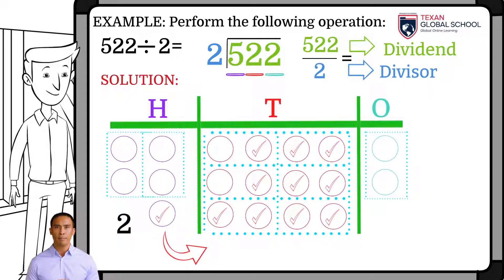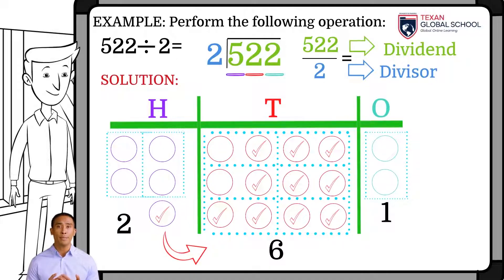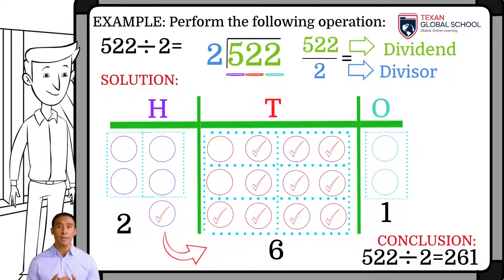All this results in 2 groups of 100s, 6 groups of 10s, and 1 group of 1s. These digits make up 261, which is the division quotient. Hence, we can conclude that 522 divided by 2 equals 261. Since there were no elements left over in the 1s, the remainder is 0.